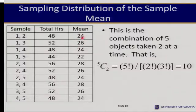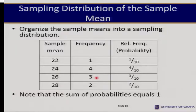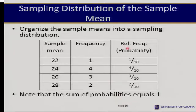Some values repeat. For example, 24 is repeating, but 22 is not. Since we don't want to repeat them, we put them in a probability distribution. The unique values from the previous table are 22, 24, 26, and 28. The value 22 appeared once, 24 appeared four times, 26 appeared three times, and 28 twice. We can find the relative frequencies, which are the same as the probability: 1/10, 4/10, 3/10, and 2/10. When you sum the relative frequencies, they equal 1.